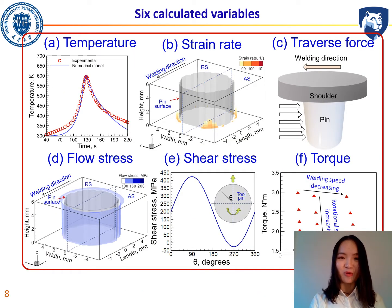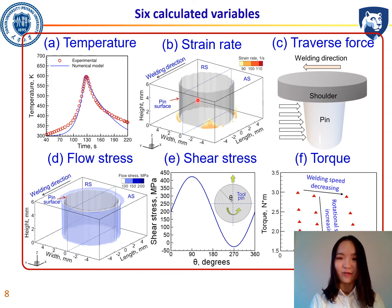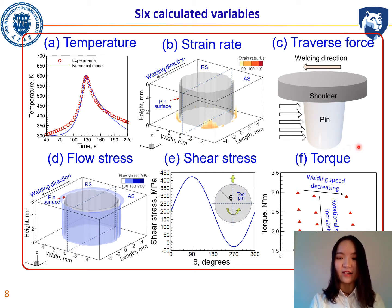With the help of the numerical model, we can determine the material flow and heat transfer inside the process and calculate six key variables: temperature, strain rate, traverse force, flow stress, shear stress, and torque. Temperature indicates the heat generation and softness of the material. Strain rate is calculated from the velocity gradient and shows how continuously the material flows. Flow stress shows how difficult it is for the material to flow around. Traverse force, shear stress, and torque on the tool pin indicate how hard it is for the tool pin to move and how much torque is needed to stir the material.